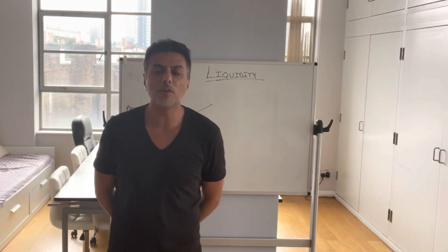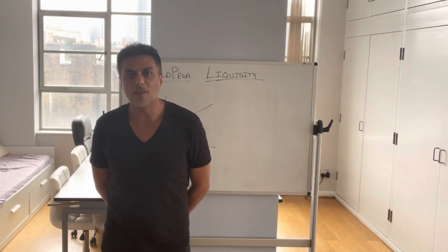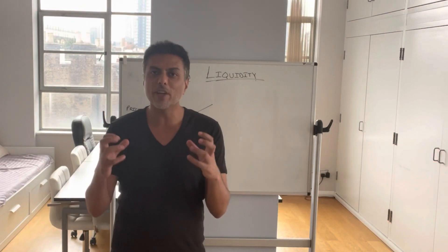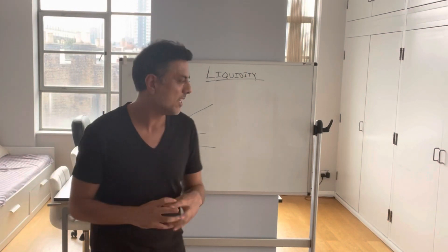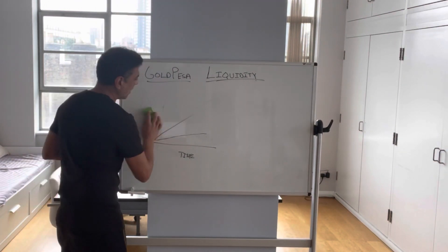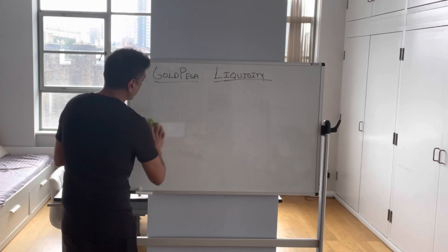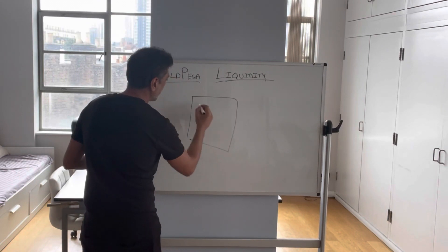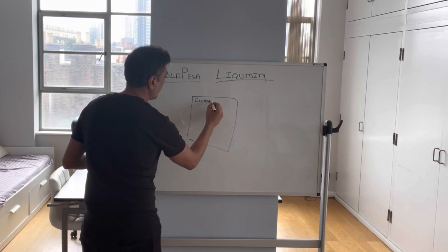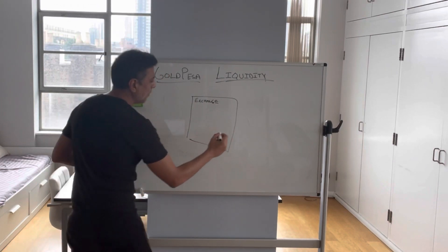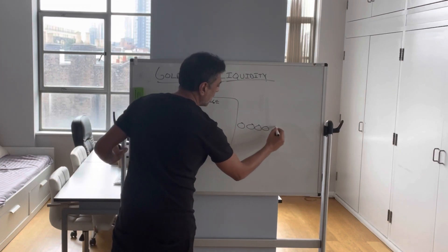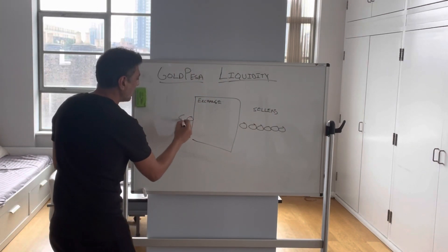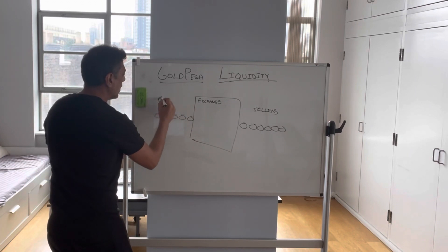Historically, if you think about the New York Stock Exchange, liquidity is created by a number of buyers and a number of sellers. When the buyers and sellers agree on a price, that transaction takes place. Looking at the old model — called the order book model — to create liquidity for any asset class like the New York Stock Exchange, you have an exchange, a line-up of sellers, and a line-up of buyers.